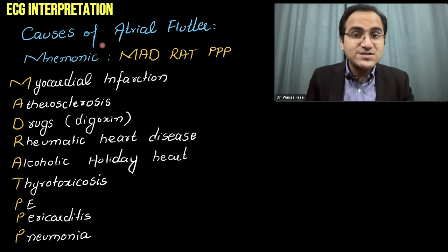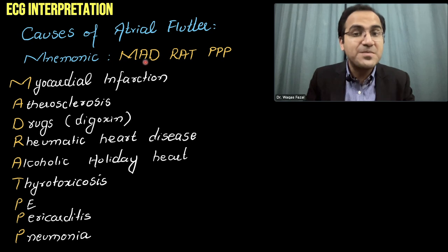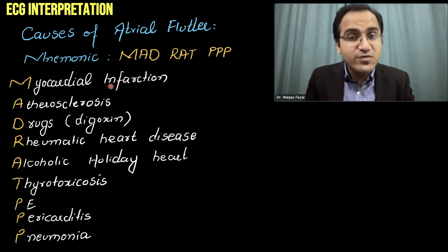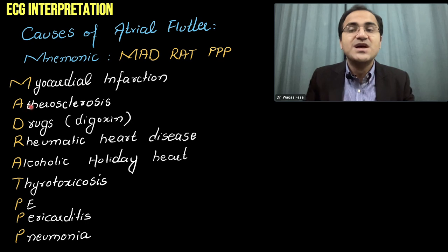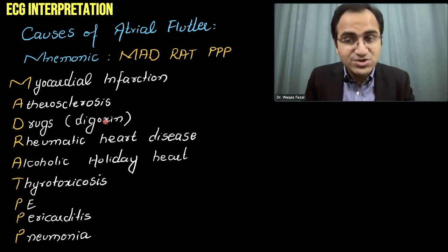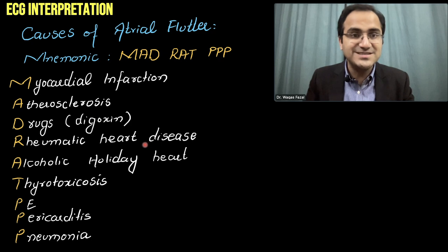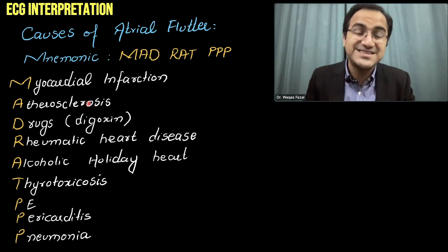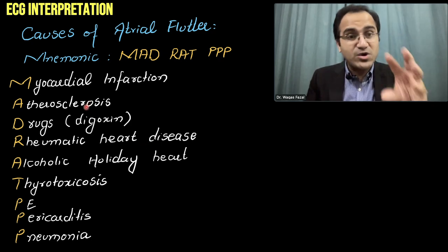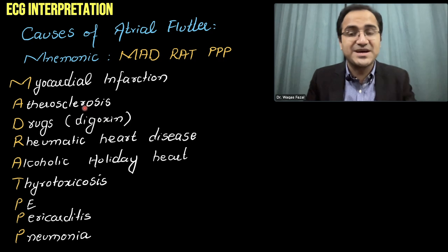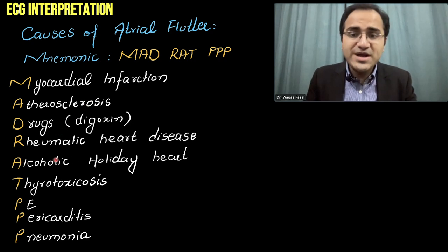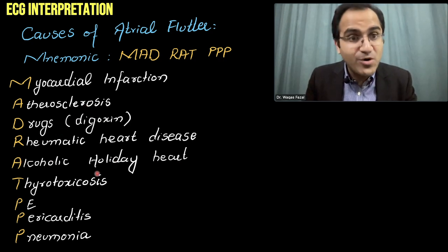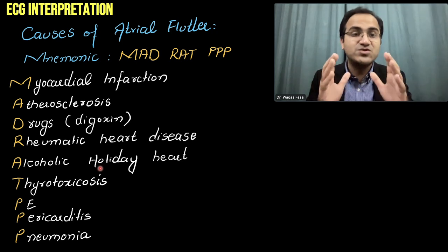The causes of atrial flutter can be remembered with the mnemonic MAD RAT triple P: myocardial infarction — a very important cause — atherosclerosis, drugs like digoxin, rheumatic heart disease. Anything that damages the heart can result in an ectopic focus or ectopic pacemaker. Alcoholic holiday heart syndrome is also an important cause.